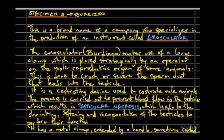Specimen A is the Burdizzo, which is actually a brand name of a company specialized in producing an instrument called the emasculator. The emasculator is a castrating device used to castrate animals. It is made of a large clamp placed strategically by an operator on the male reproductive organ of some animals, used to crush or sever the sperm ducts leading into the testicles.